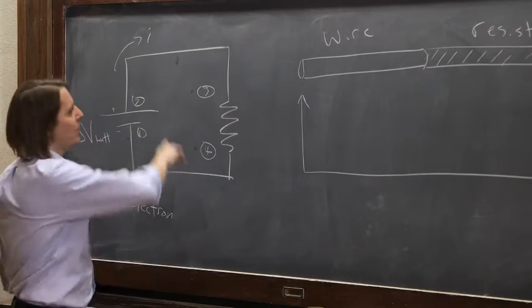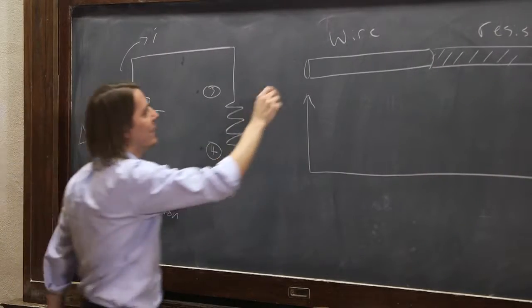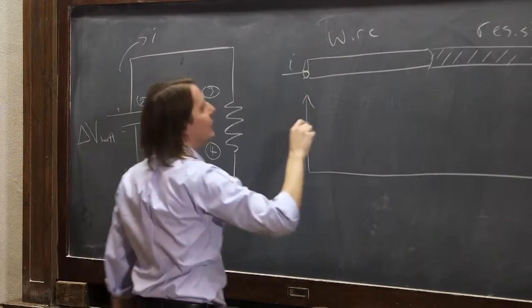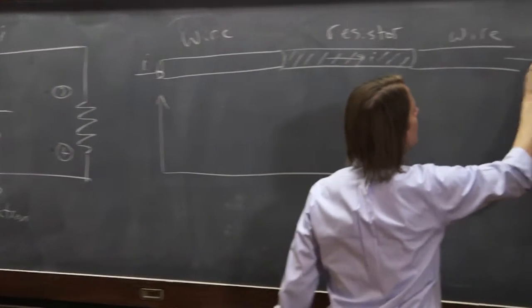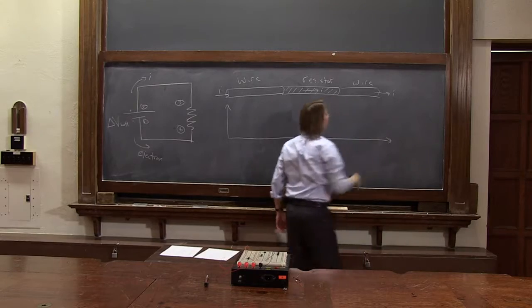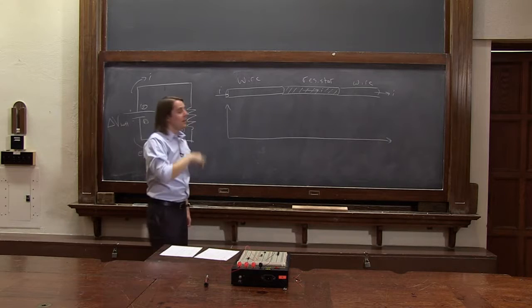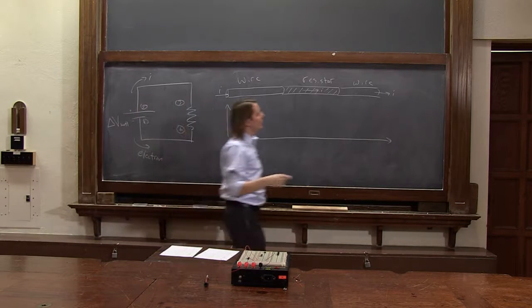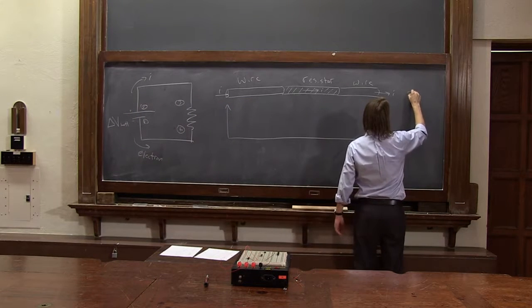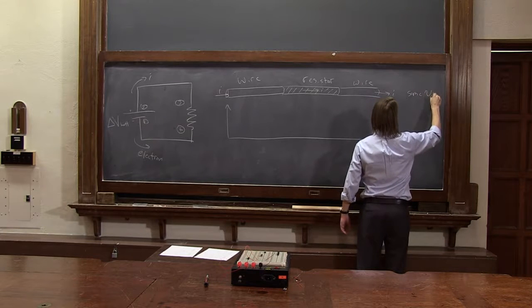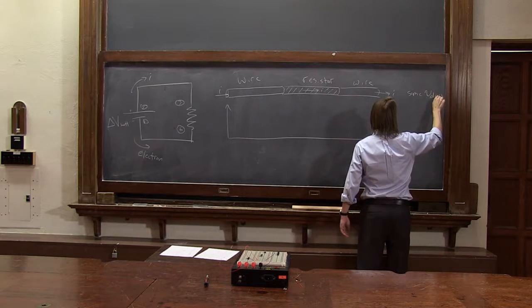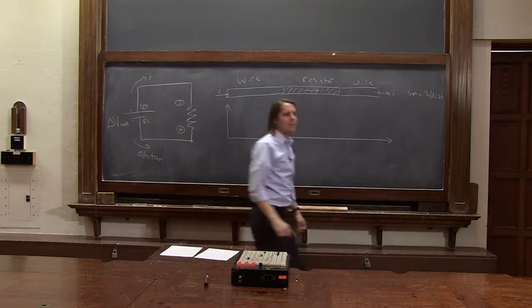It's the same current flows all the way through. So we have some current flowing through here, it's flowing through here, and it's flowing through here. And in this case, they have the same cross-sectional area. So they all have the same V-drift.